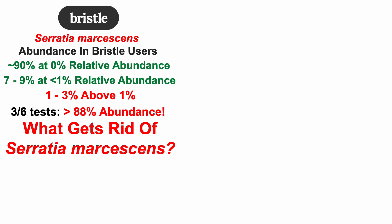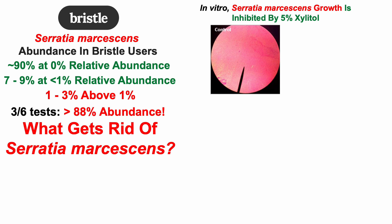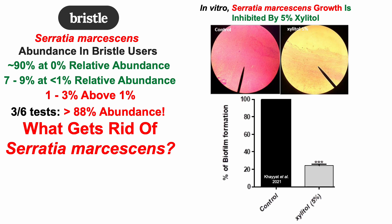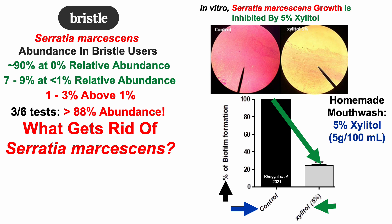So what can get rid of Serratia marcescens? I went to PubMed and found a study where in vitro — in cell culture — Serratia marcescens growth is inhibited by 5% xylitol. We can see a control plate filled with Serratia, and then in the presence of 5% xylitol almost all of that red staining is gone. Quantitatively, adding 5% xylitol produced about an 80% reduction in Serratia biofilm formation.